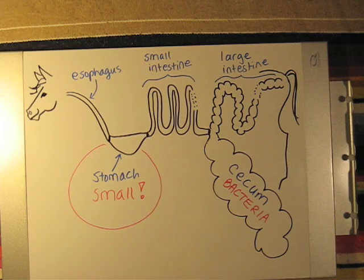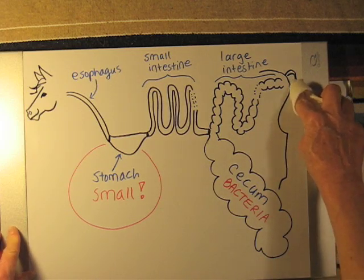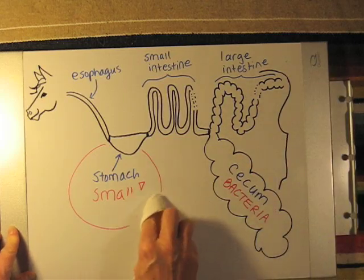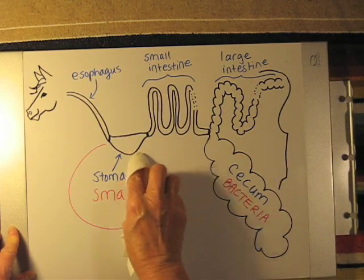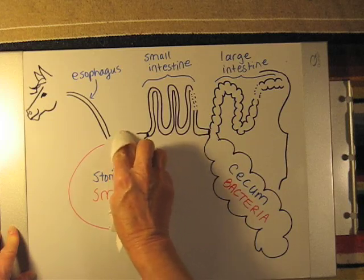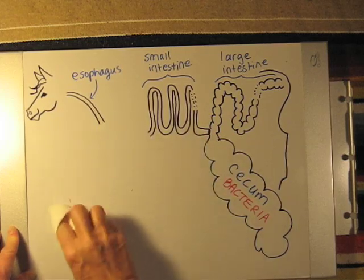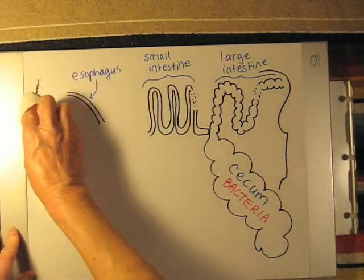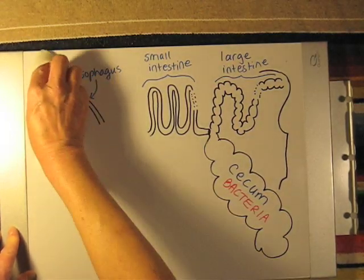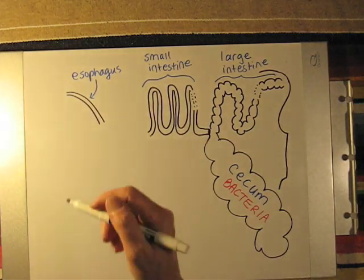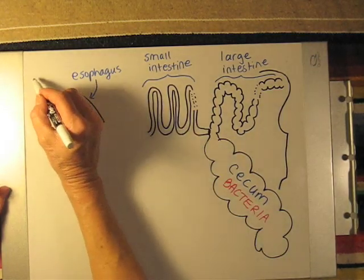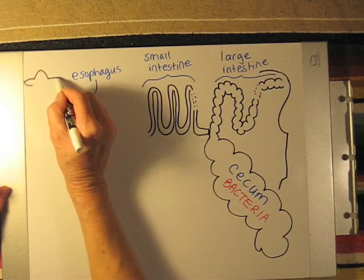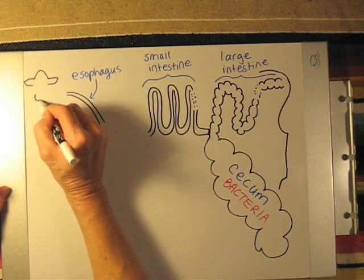If we change from a hindgut fermenter such as the horse to a ruminant animal, the only change is going to be in the stomach area of the animal. The cecum of ruminant animals is also large and has functional bacteria that are digesting material in the cecum. So we'll change the head — this is a cow.